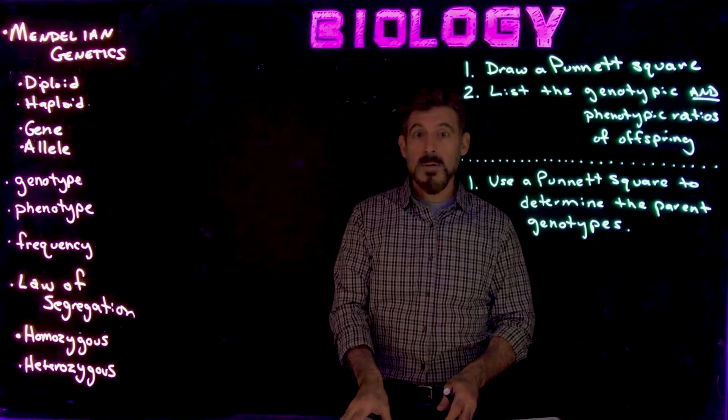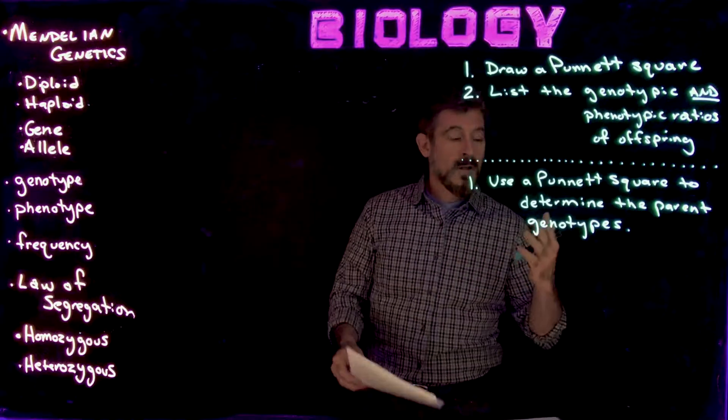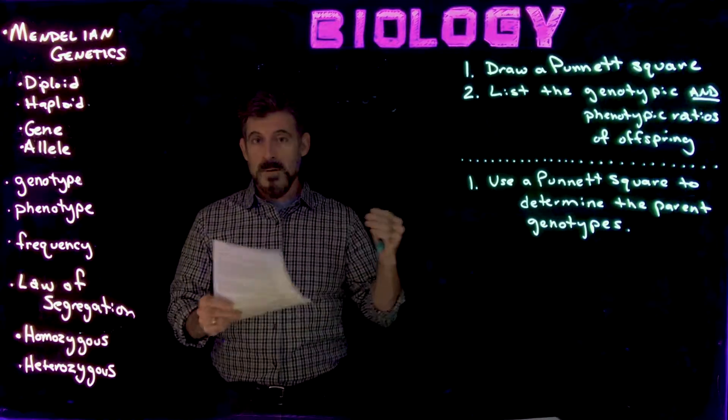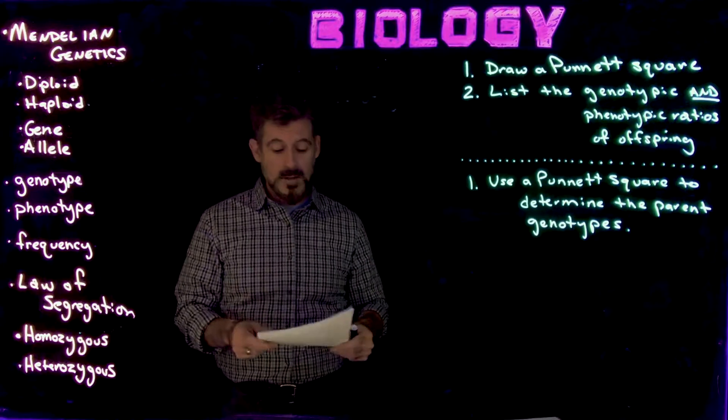Alright, so what we're going to do is work out a couple Punnett square problems with some simple characteristics where there's dominance and recessive, and they're just monohybrid crosses that we're going to see.